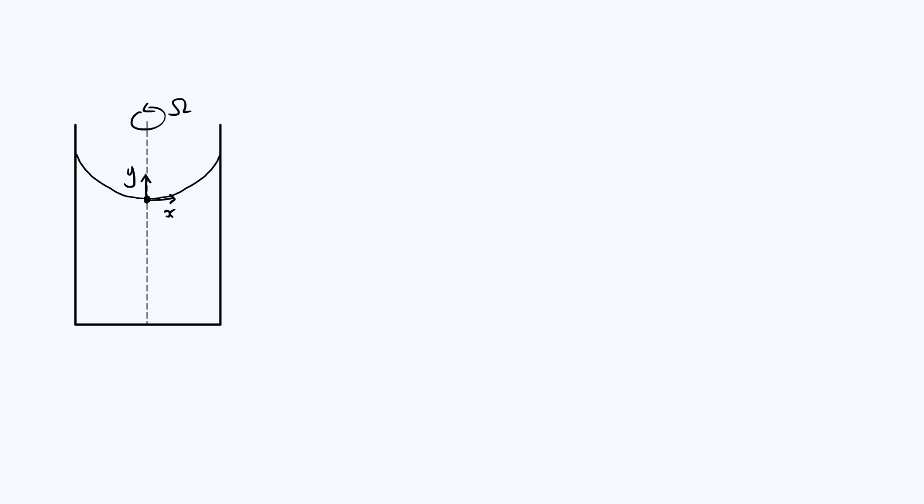To start making this more quantitative, I've put down a Cartesian coordinate system whose origin is at the central minimum of the surface of the liquid. Although this is really a three-dimensional problem, in the steady state it's going to be rotationally symmetric about the y-axis, so we can imagine taking a slice through our cylindrical container and treat it as a 2D problem, and the question just becomes find y as a function of x.